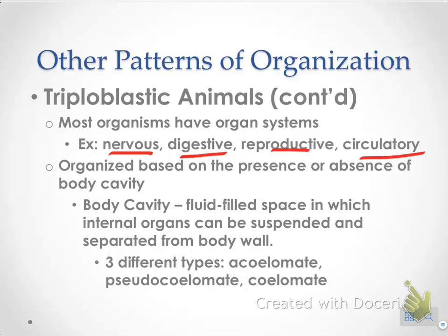These organisms are organized even further based on body cavity — a fluid-filled space that we'll look at in much greater detail. Once they're triploblastic, they're divided into being acoelomate, pseudocoelomate, or coelomate. That's the end of your notes. Thank you.